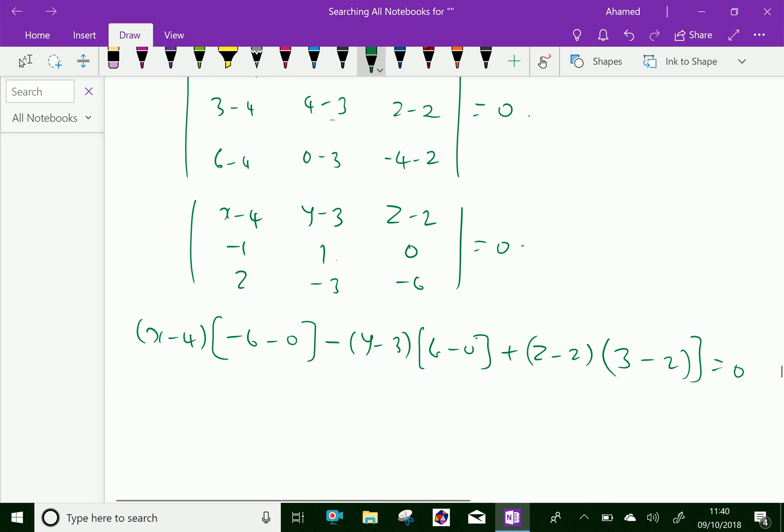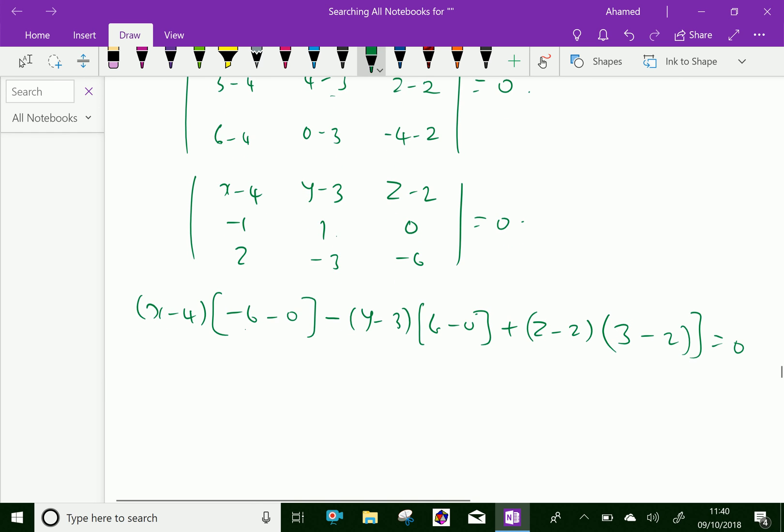Here minus 6 minus 0 is minus 6, therefore minus 6 into x minus 4. Here 6 minus 0 is 6, so minus 6 into y minus 3. And 3 minus 2 is 1, that is 1 into z minus 2 equals 0.